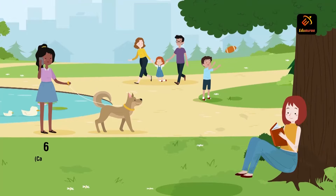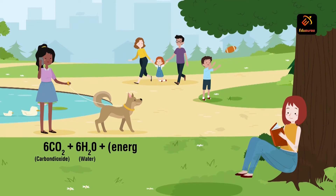In today's session we'll study about the equation for photosynthesis. What exactly happens in photosynthesis? In photosynthesis, carbon dioxide gas combines with water, which is taken from the soil, in the presence of sunlight and a pigment called chlorophyll, forming the simple sugar glucose along with the release of the most important gas called oxygen.